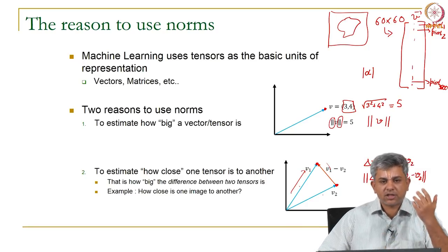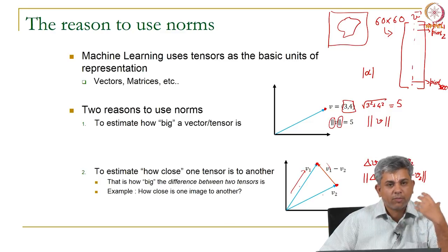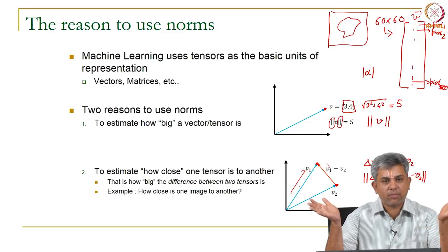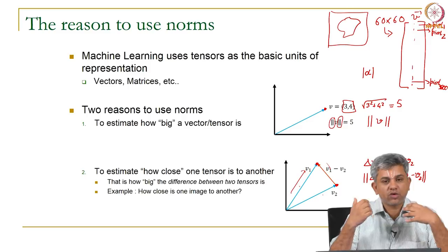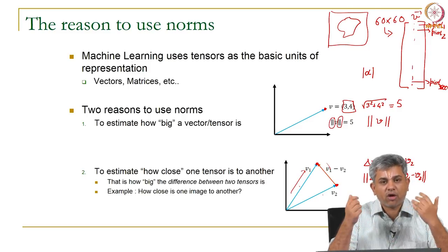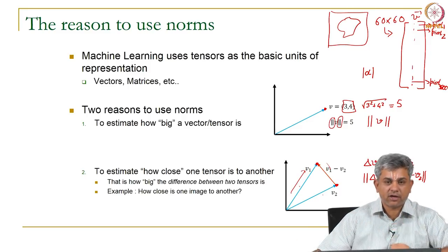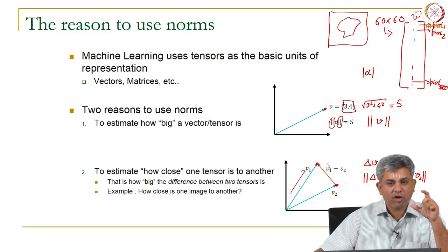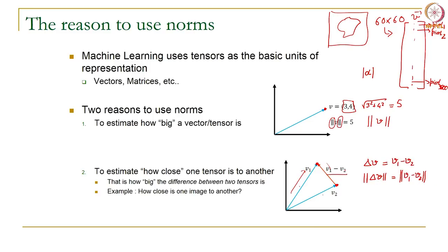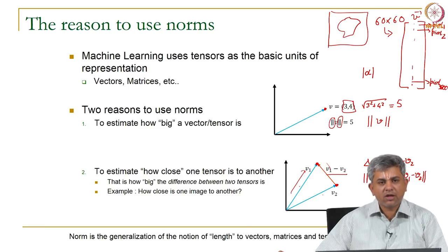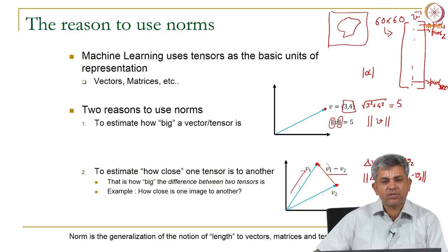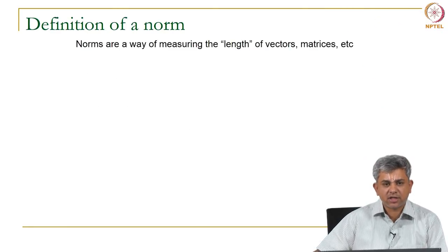You can find out how close one sound is to another, how close one word is to another, how close one image is to another — provided all of these can be represented as vectors. You can find out the norm of the difference between two vectors. The norm is actually a generalization of the notion of length — extending the idea of size from simple scalars to vectors, matrices, and tensors.